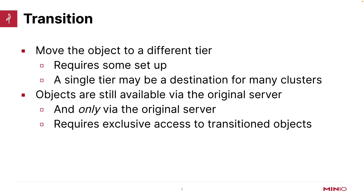Objects are still available via the original server. This is important because it means you don't have to change your application code or anything to access the object the way you had always been accessing it. A link is set up between the original tier and the transition tier, and you access the object through the original server. This does mean that you have to have exclusive access to the transition objects — you cannot have various different services trying to access that object through different means. You have to access it all through MinIO, otherwise the transition is not going to function properly.